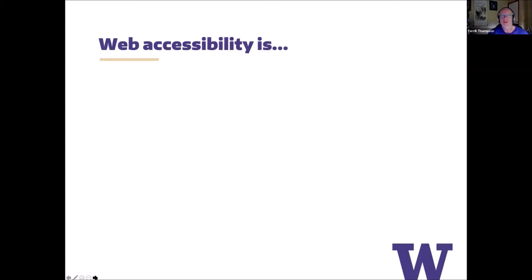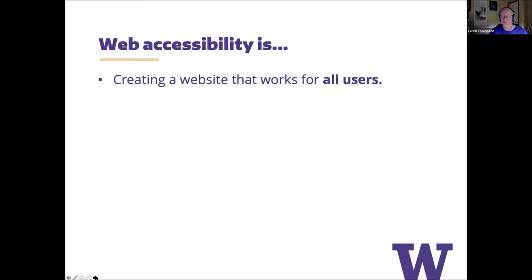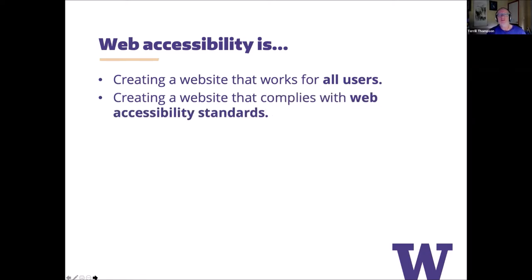Web accessibility is really about diversity — making sure that everybody can use your website, creating a website that works for all users. All users are very broadly defined: they're using all sorts of different devices and configurations, and we want our content to be accessible to all of them. Web accessibility is also about creating a website that complies with web accessibility standards — standards that have been developed to specifically document what it means from a technical standpoint to have an accessible website.